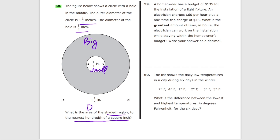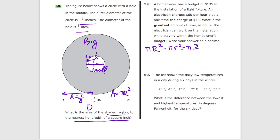The big diameter gives us a big radius equal to half of five-fourths, which is five over eight. For the small circle with a diameter of one quarter of an inch, the small radius is one over eight. Applying the area formula A = πr², we get π times (5/8)² minus π times (1/8)², which equals 25/64 π minus 1/64 π, giving us 24/64 π. Dividing top and bottom by 8, we get 3/8 π.